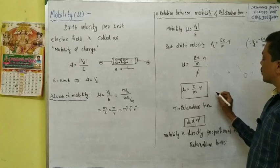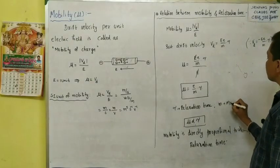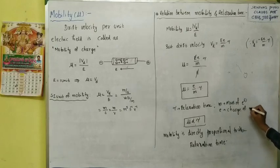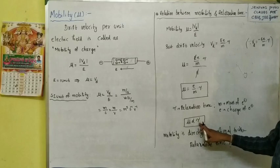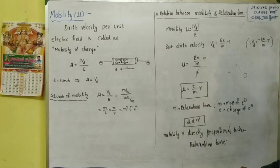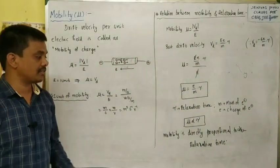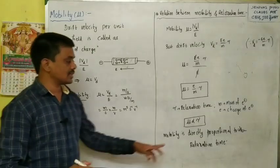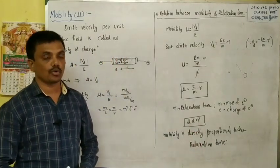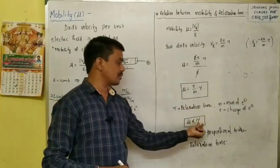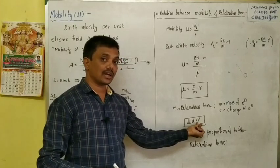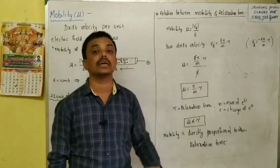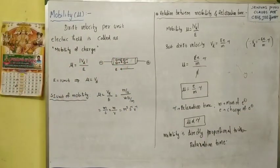Here, m is the mass of the electron and e is the charge of the electron. The relaxation time is the average time interval between successive collisions of electrons with the positive ions in the conductor. A clear explanation is in lecture 3.2. If relaxation time is more, the mobility is also more — the electron can accelerate longer without collision, so its speed increases by a greater amount. Thank you for watching.